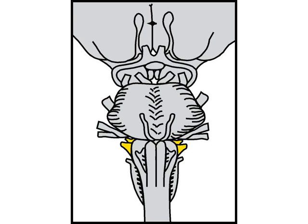This is how a bulbar or lower motor neuron palsy is sorted out from a pseudobulbar or upper motor neuron palsy. For upper motor neuron disease to cause palatal weakness, it must be bilateral, because there is bilateral upper motor neuron innervation for each of the nuclei ambiguus.